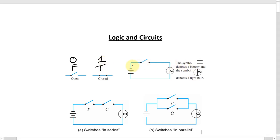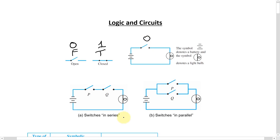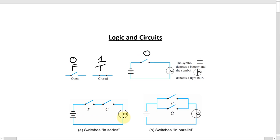Here's a simple circuit where we have a symbol for a battery and a symbol for a light bulb. In this circuit, we could have the switch on or off, and that would turn the light on and off. Right now it looks like it's open, so the light is off. This is a position that's zero.